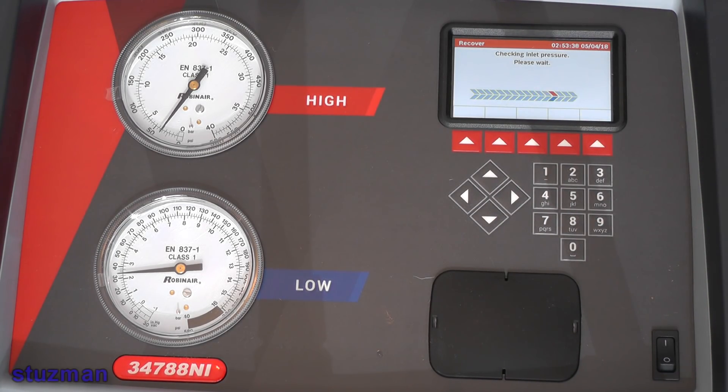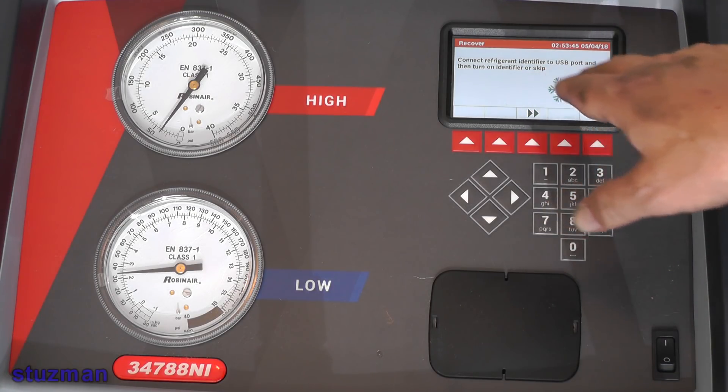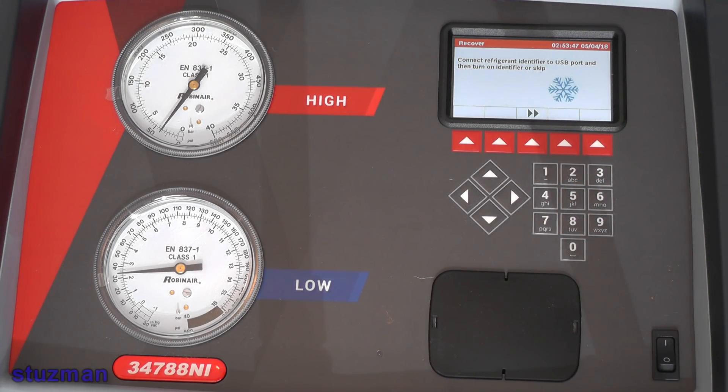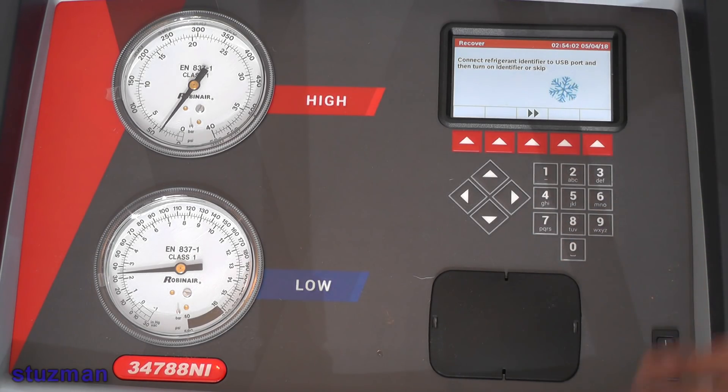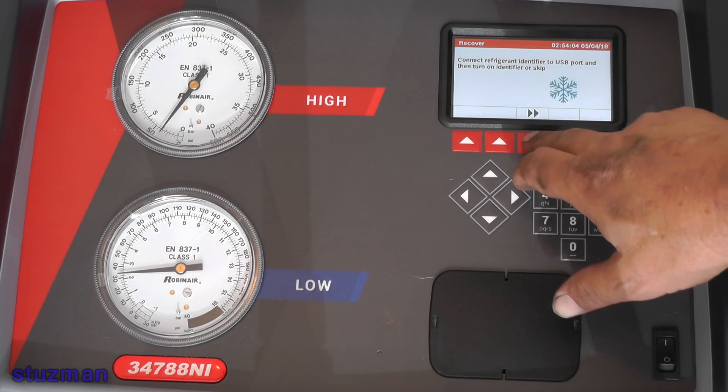So it's checking the inlet pressure. Right now it's asking about a refrigerant identifier if you want to hook it up to a USB port or if you have a standalone unit. I do have a refrigerant analyzer, but I know that this system is R134A because I put it in myself and I checked the refrigerant before I put it in. So I know it's okay, so I'm just going to go ahead to the next step.